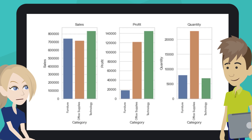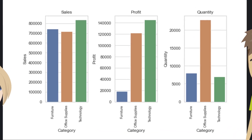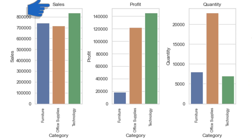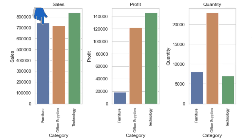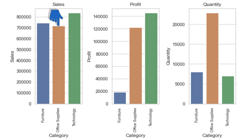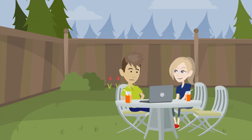We can see three bar plots of total sales, profit, and quantity by category now. My observations are: all three categories — furniture, office supplies, and technology — make a similar amount of sales. Technology is best-selling, and it is also the most profitable. Although furniture makes similar sales as technology, it is the least profitable and quantities sold are at a minimum too. Office supplies sells the most in terms of quantity, as it is a relatively cheap product.